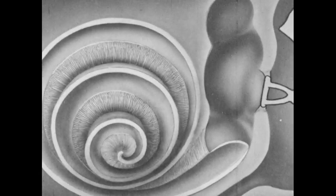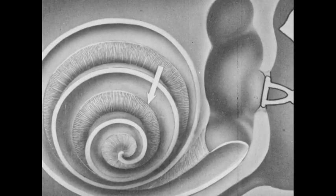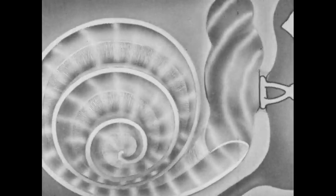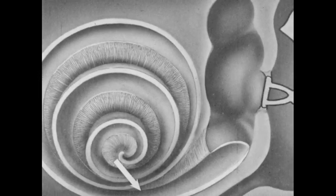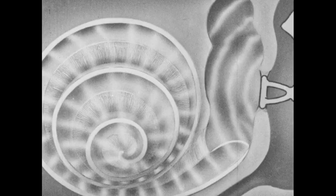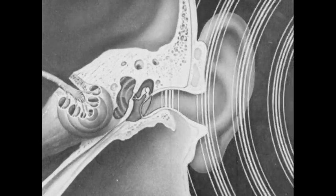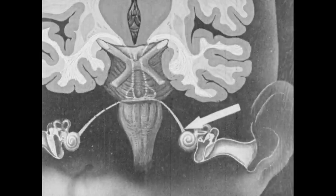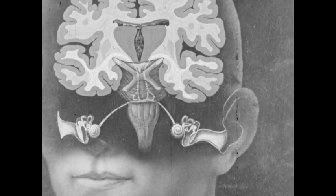Along a membrane which separates the liquid into two parts are located the auditory nerve endings. Due to the structure of the ear mechanism, the vibrations of low pitch excite the innermost nerves, while those of high pitch excite the nerves nearest to the opening into the middle ear. These excited nerve endings transmit the sound impulse along the auditory nerve to the brain. Not until the impulses arrive at the brain do we experience the sensation of hearing.